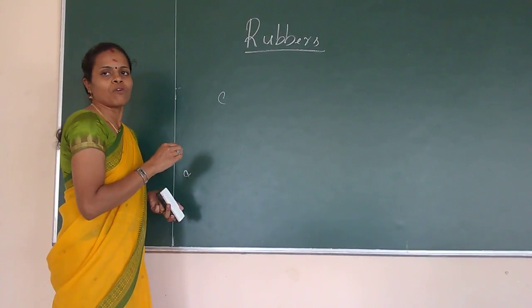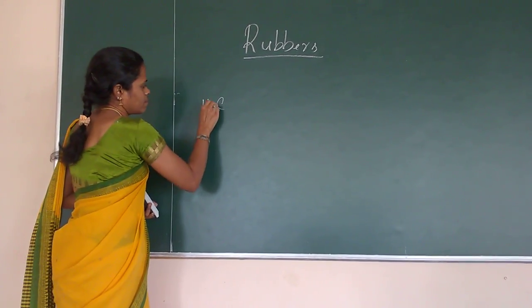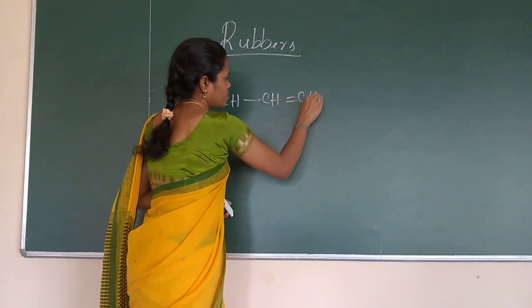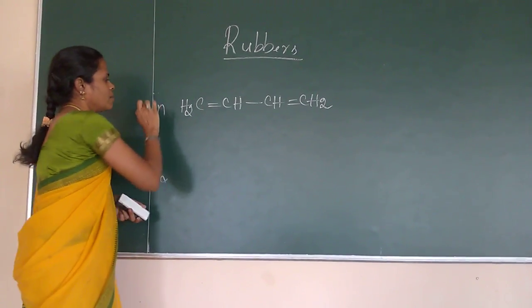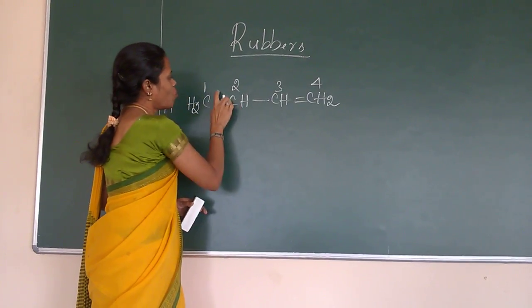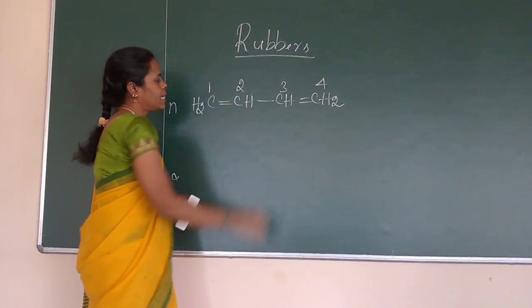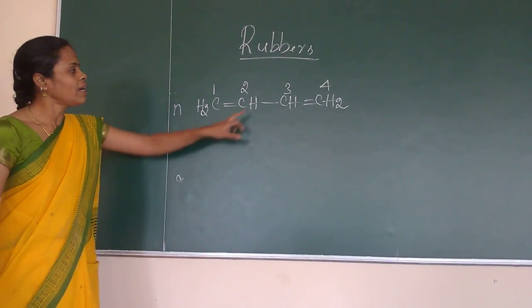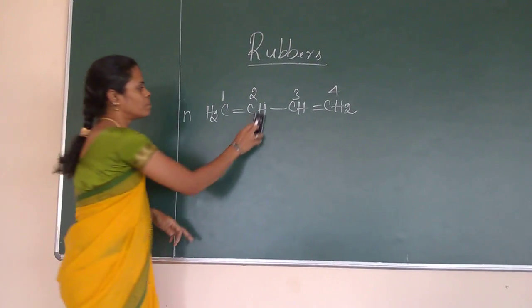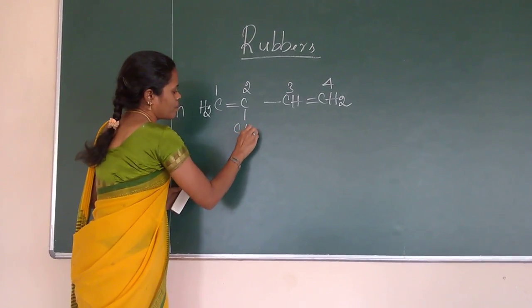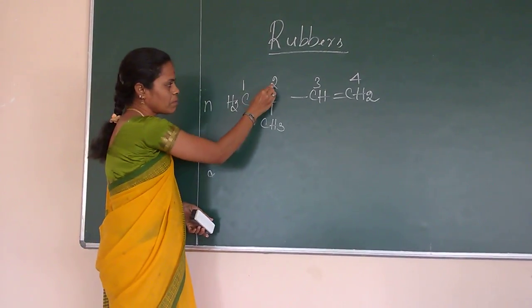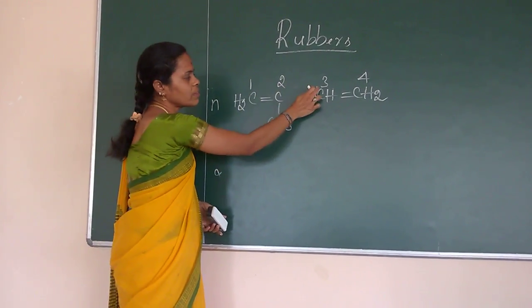This is 1, 2, 3, 4 - 1,3,2 butadiene. If you can replace one hydrogen at the second position by the methyl group, means this is called as isoprene. That is nothing but 2 methyl 1,3,3 butadiene.